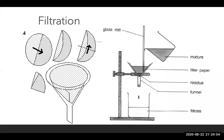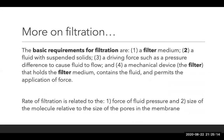In the lab procedure for filtration, we take a filter paper, put it in a funnel, and pour a mixture through it. The residue collects the part of the solid too big to get through the pores, and the filtrate is whatever gets through at the end. The requirements of filtration include a filter medium, a fluid with suspended solids, a driving force such as pressure, and a mechanical device like the filter. The rate of filtration is related to the force of fluid pressure and the size of the molecule relative to the pore size in the filter membrane.